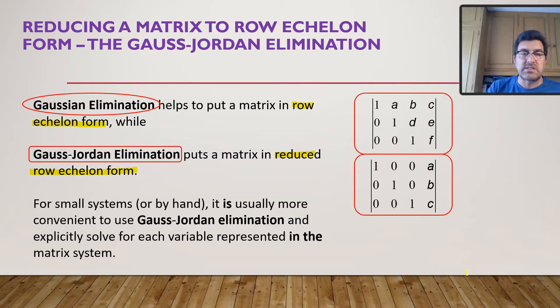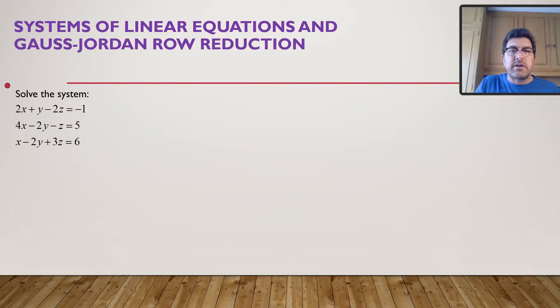For all systems, it is usually more convenient to do Gauss-Jordan and explicitly solve for each of the variables represented in that matrix system. I'm putting up that system for you to solve using Gauss-Jordan row-reduction.